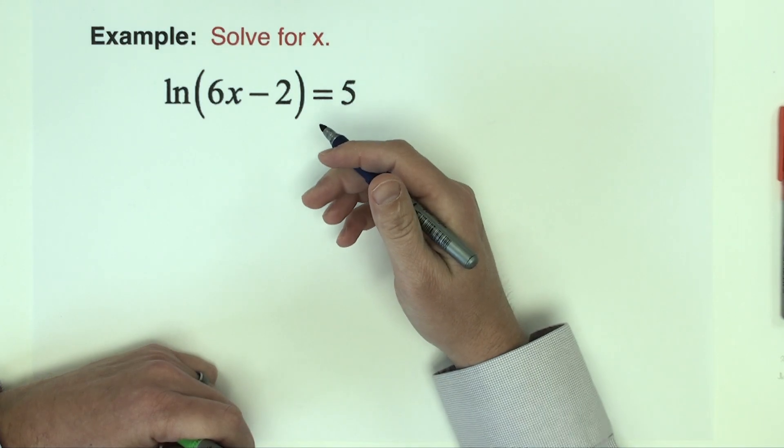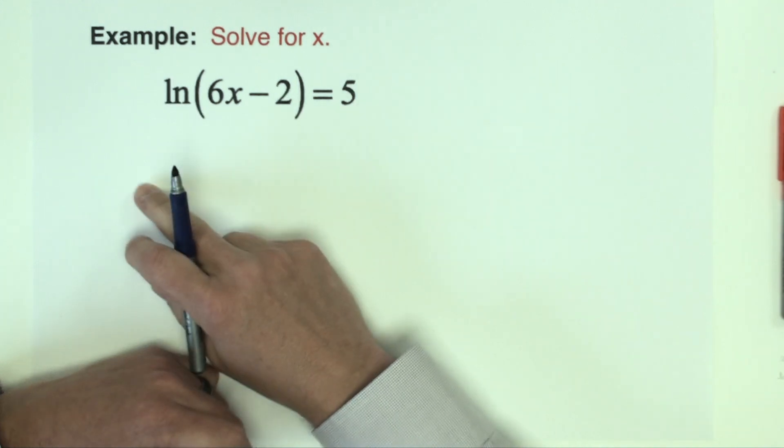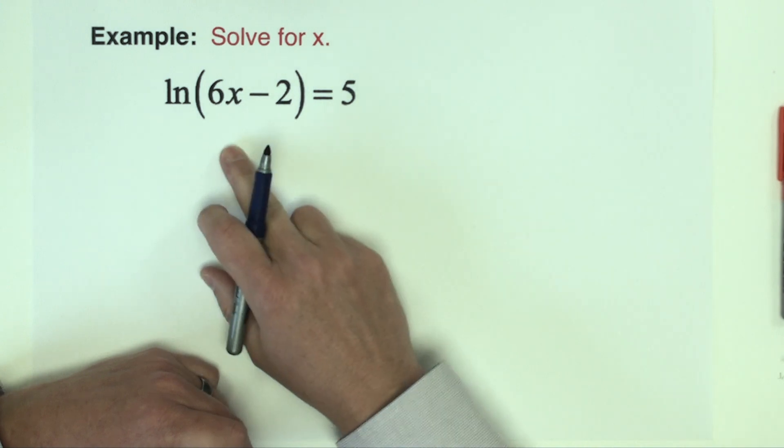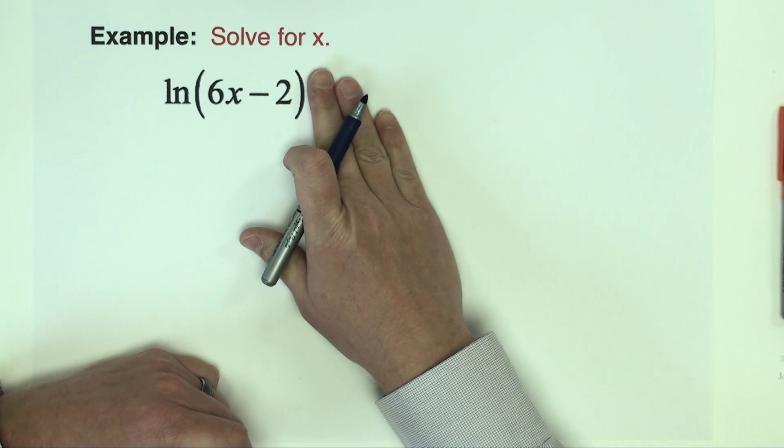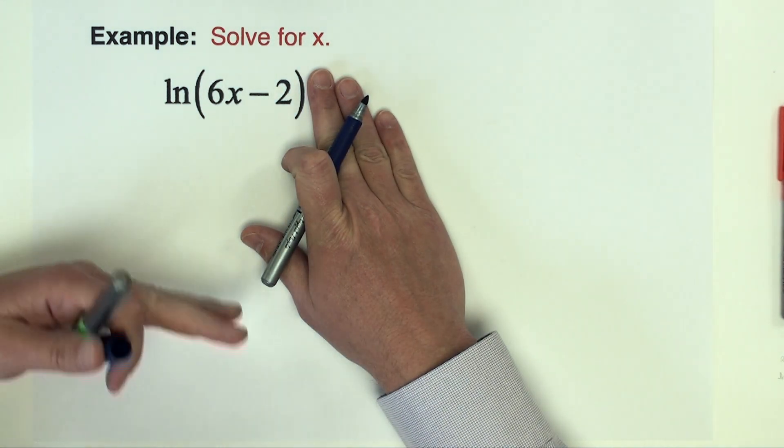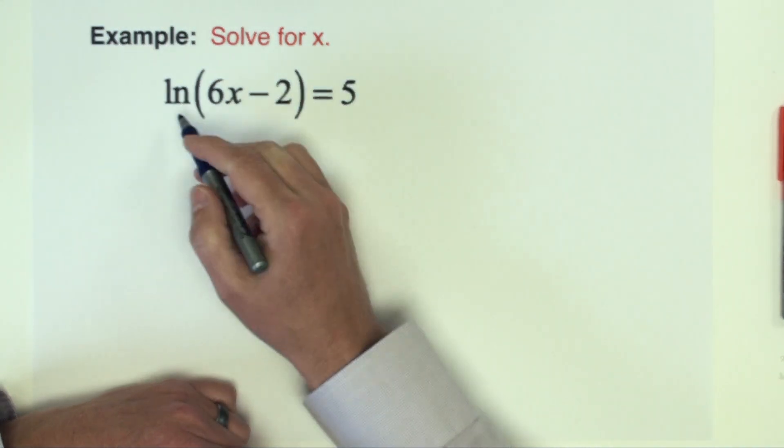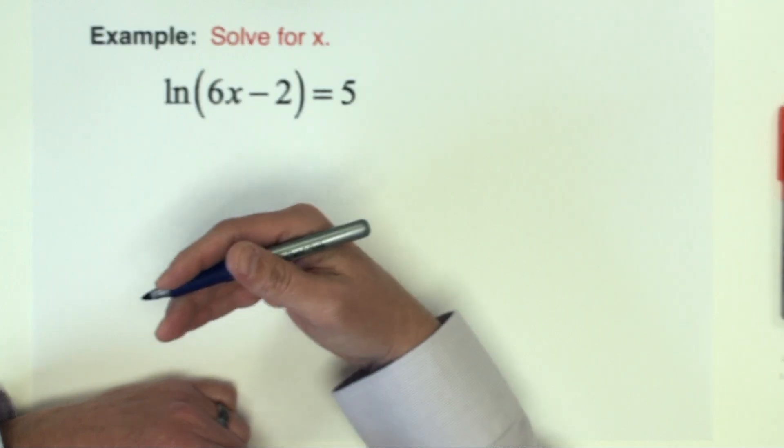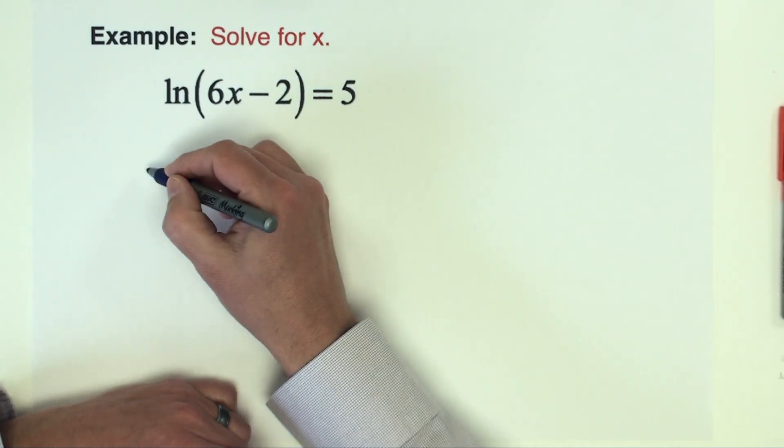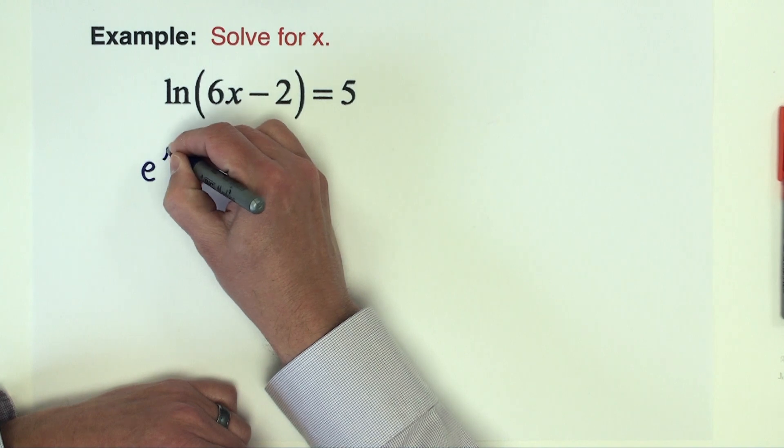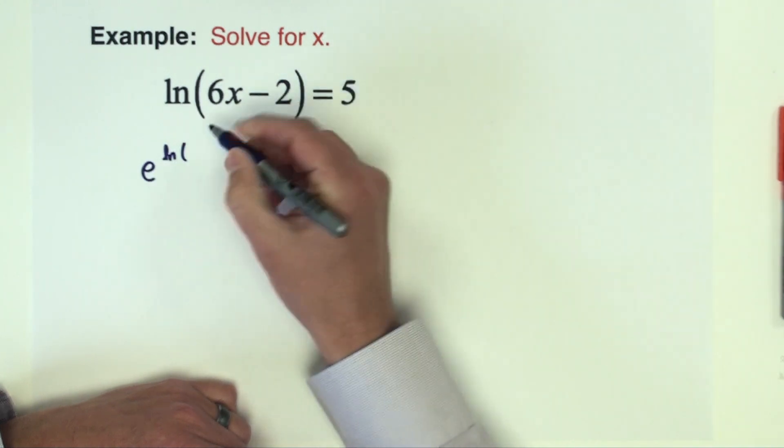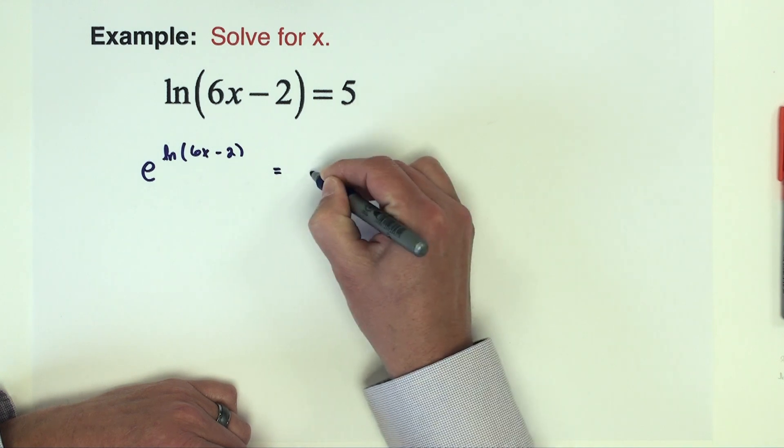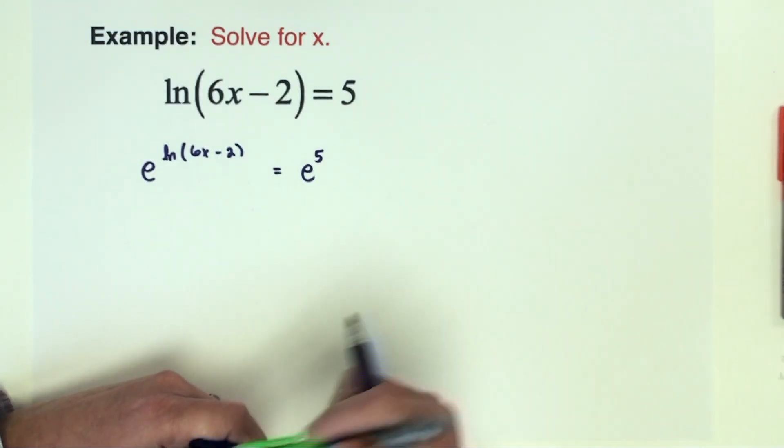Final example that I have in this video, we see an equation that again just like the last ones has a logarithm in it. This logarithm is by itself. We can go straight to exponentiating both sides of the equation. This is a natural logarithm and a natural log is a log base e. So we're going to have to raise this above an e. So e raised to the natural log 6x minus 2 equals e raised to the fifth power.